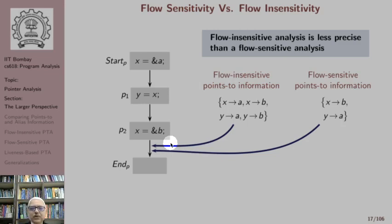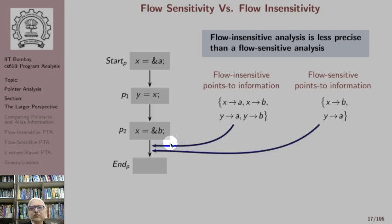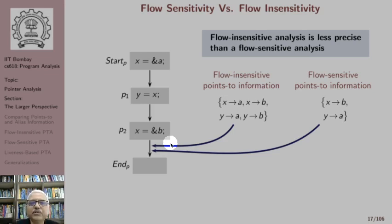Flow-insensitive points-to information is the same at all program points — there is no distinction between different program points. The advantage is that we maintain a single piece of information that is a valid over-approximation for all program points, so we are computing a smaller amount of information. Flow-sensitive analysis, on the other hand, must maintain different pieces of information at each program point.